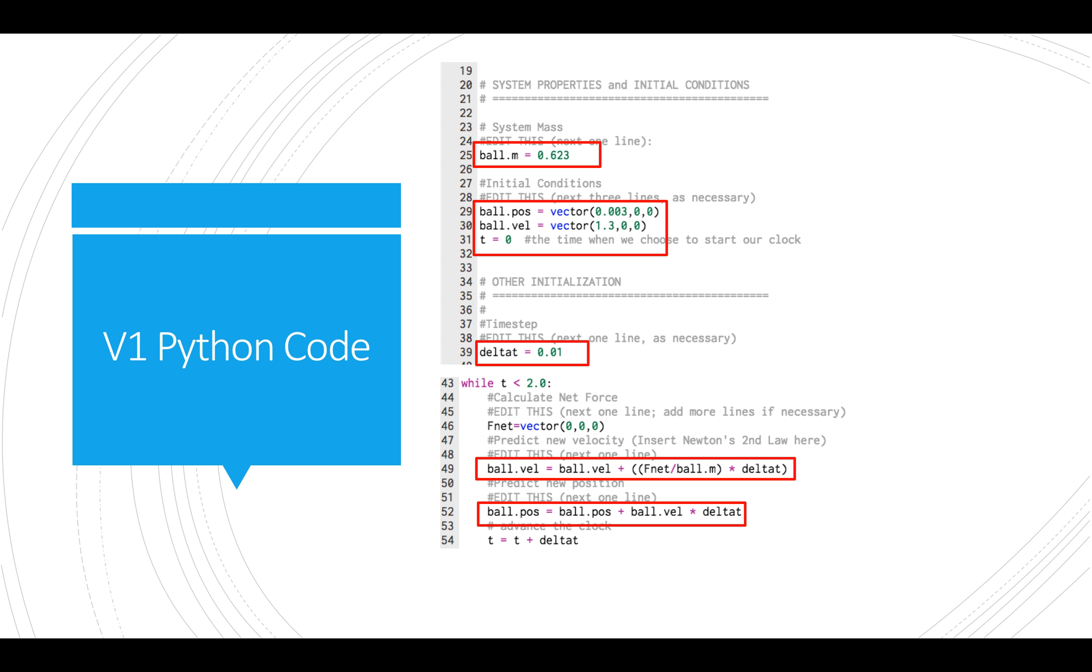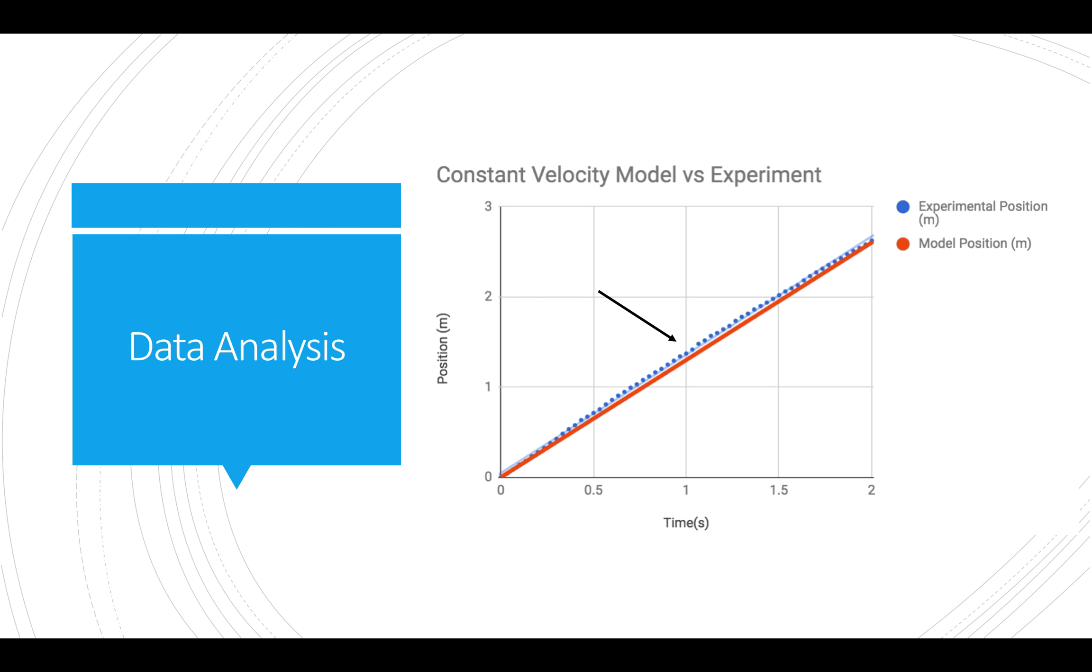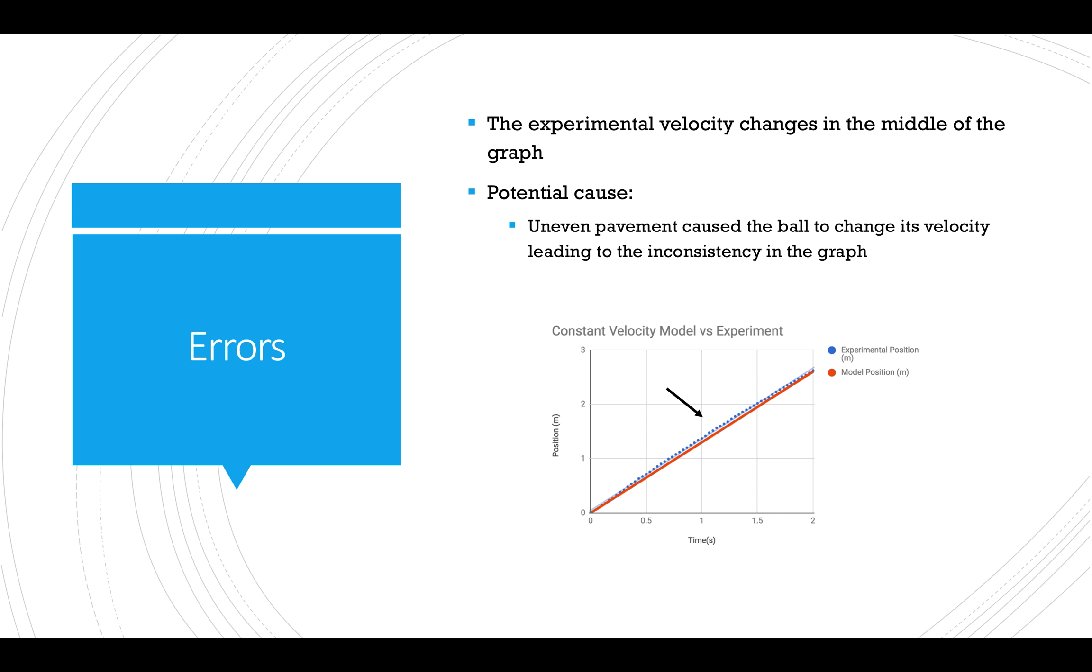The position versus time graph comparing the computational model and the experimental condition is shown here. As you can see the beginning and end of the graph lines up quite well but as pointed out by the arrow the middle of the graph demonstrates a change in velocity for the experimental condition. This error could be caused by the uneven pavement that may have led to a change in velocity. The pavement was sloped downhill which would lead to an increase in velocity which is demonstrated by the fact that the blue line is slightly above the red line in the graph.